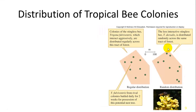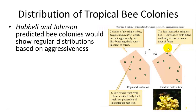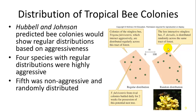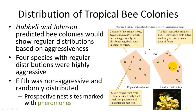Hubbell and Johnson studied different bee species grouped by aggressiveness. They found more aggressive species were more evenly dispersed — their aggressiveness prevented close approach to each other's territories. Non-aggressive species were more randomly distributed. Nest sites were marked with pheromones to keep other individuals away from good nesting locations.